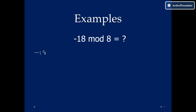Let us solve minus 18 mod 8. Minus 18 plus 8 gives minus 10 — still negative. Add 8 again: minus 10 plus 8 gives minus 2 — still negative. Add 8 again: minus 2 plus 8 equals 6. So the answer of minus 18 mod 8 is equal to 6.